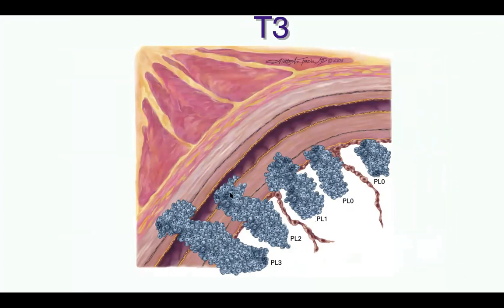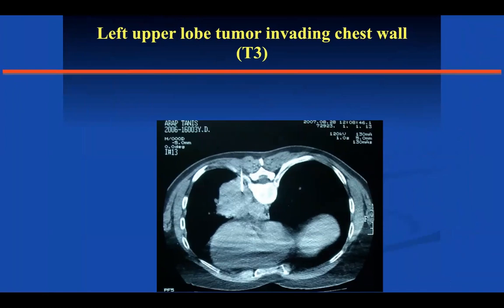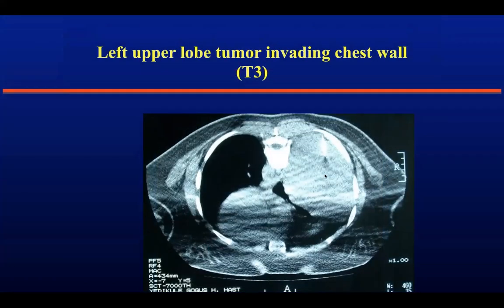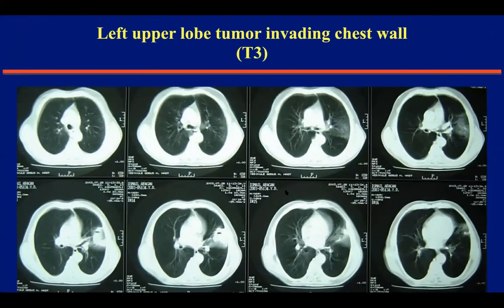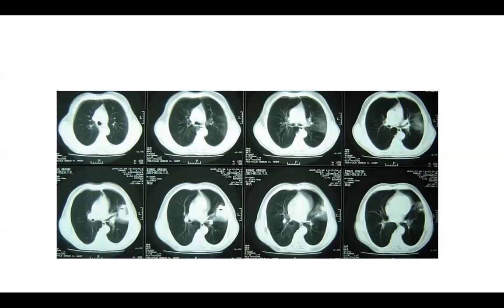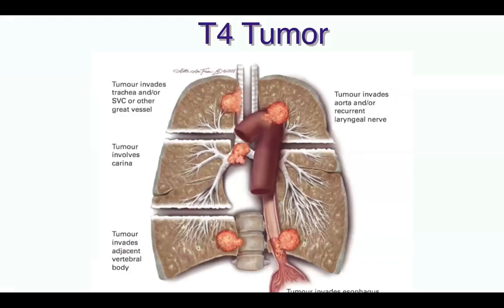When we operate, is it possible to operate tumors invading the aorta? Yes, it is possible with cardiovascular colleagues' assistance. It is also possible to resect a tumor invading the esophagus. But the survival rate is about 15% or lower, so the operation is futile and unnecessary in those patients. The key factor of nodal status is important in terms of resectability and survival.